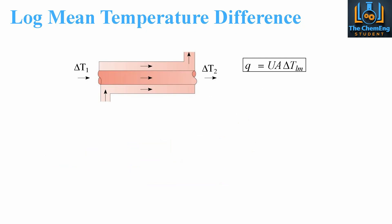We're going to look at co-current first. Co-current is when the direction of flow for both fluids is in the same direction — regardless of which one is heating and which is cooling, both fluids are travelling in the same direction, in this case from left to right. We have delta T1 as the difference in temperature at the inlet, where the streams come into contact with each other, and delta T2 as the outlet conditions. Our Q equation is Q equals U times A times delta Tlm, so we have the overall heat transfer coefficient and surface area — we just need to find delta Tlm.